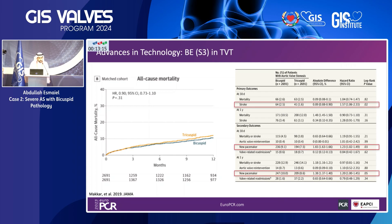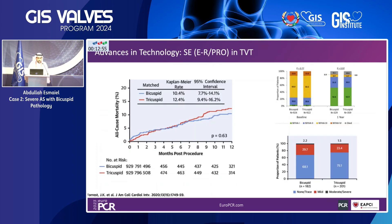In 2019, data from the TVT registry looked at patients who underwent TAVI with bicuspid stenosis using the S3 balloon expandable valve, comparing them to a matched tricuspid cohort, showing no difference in all-cause mortality. The same finding was observed with the self-expandable Evolute platform.